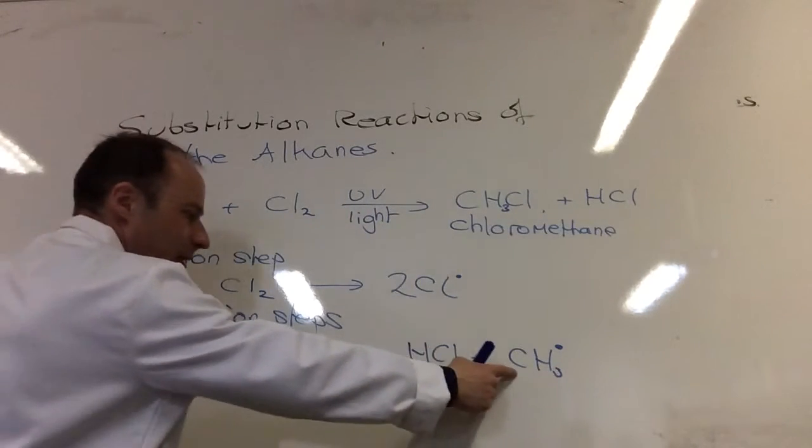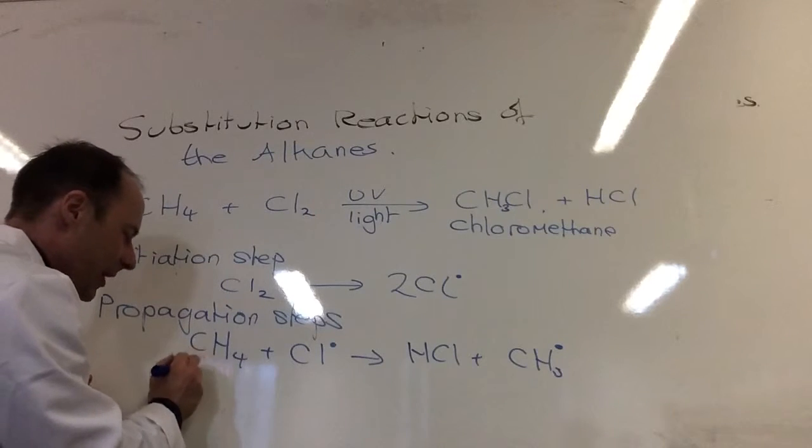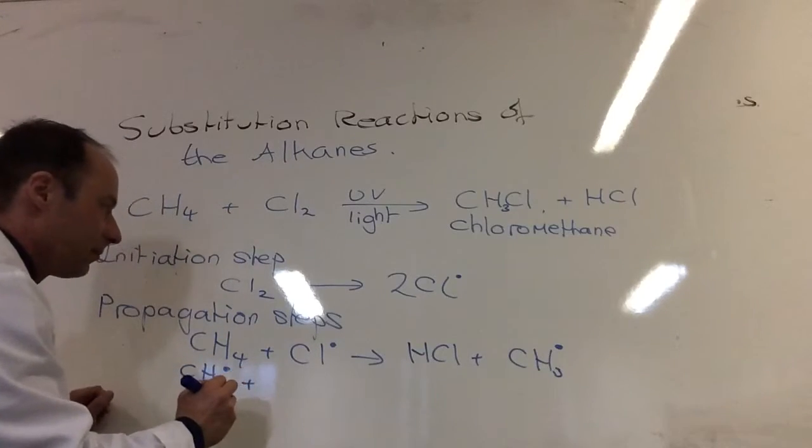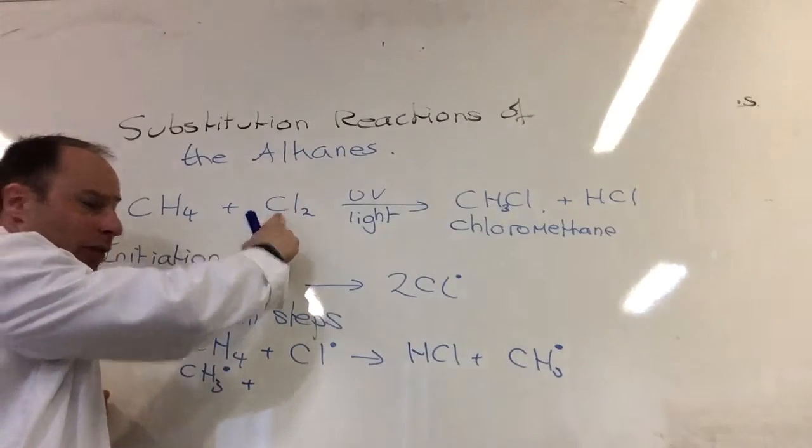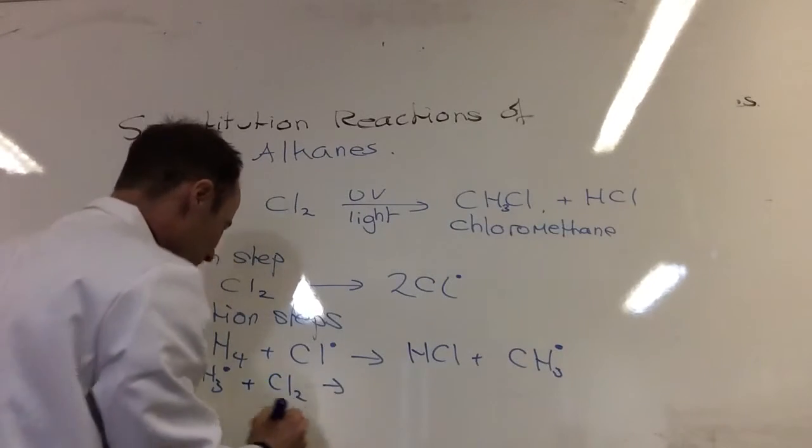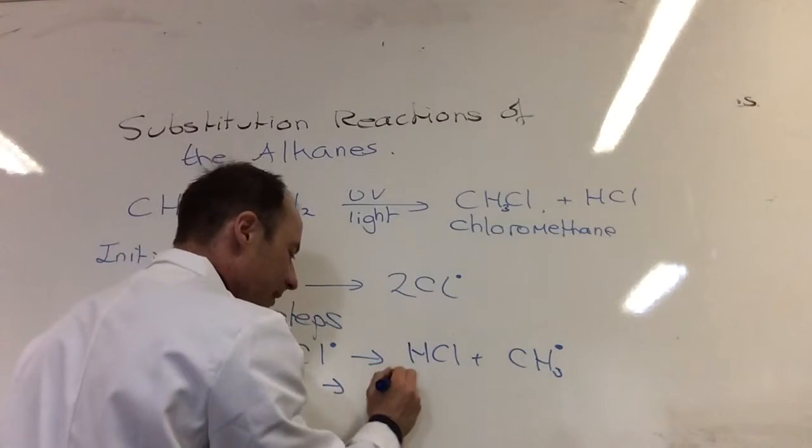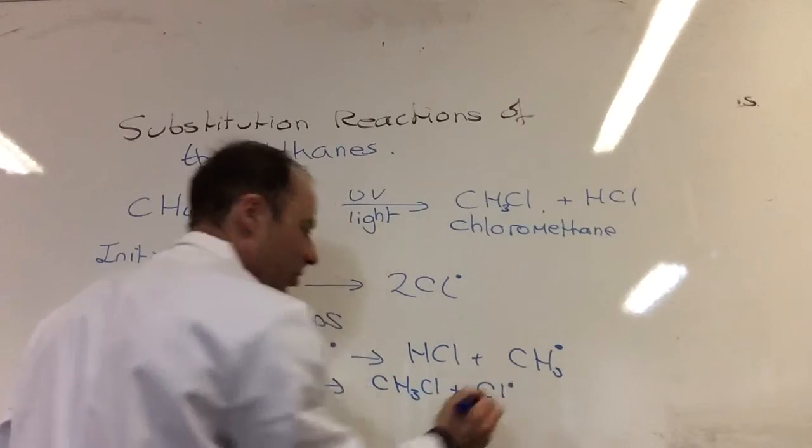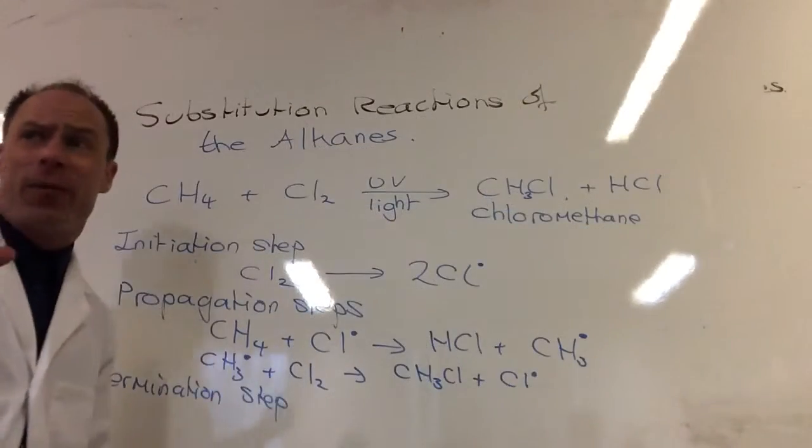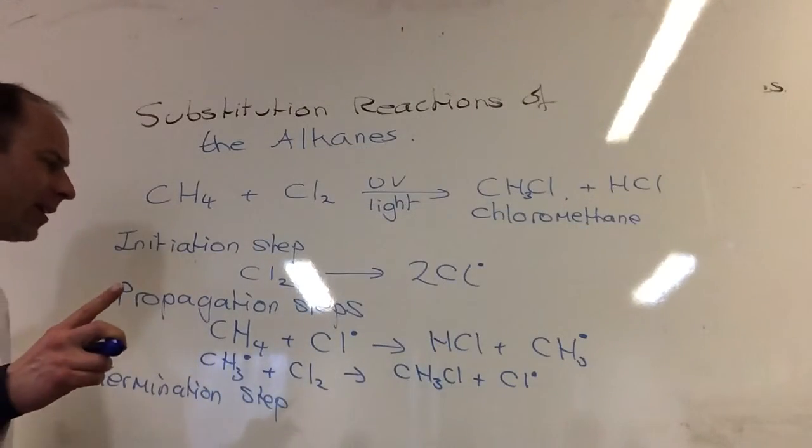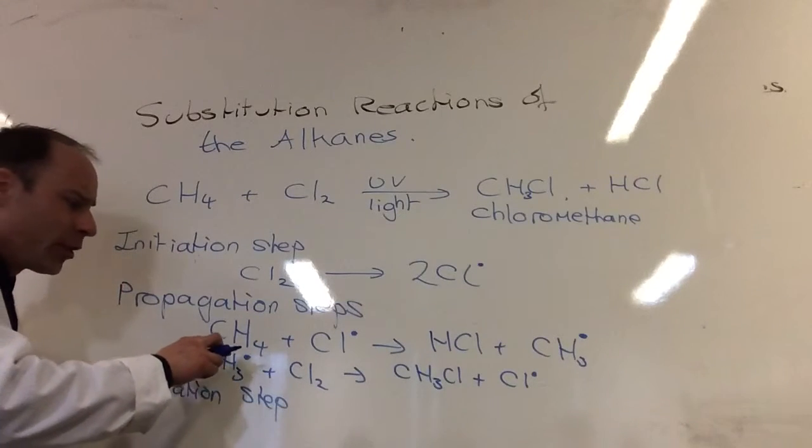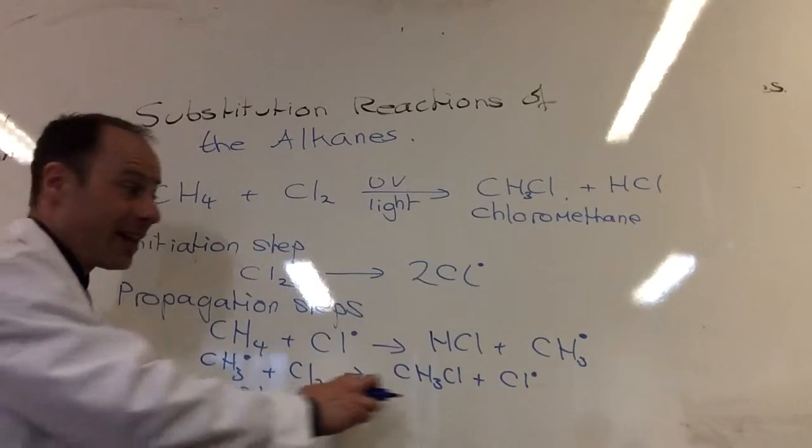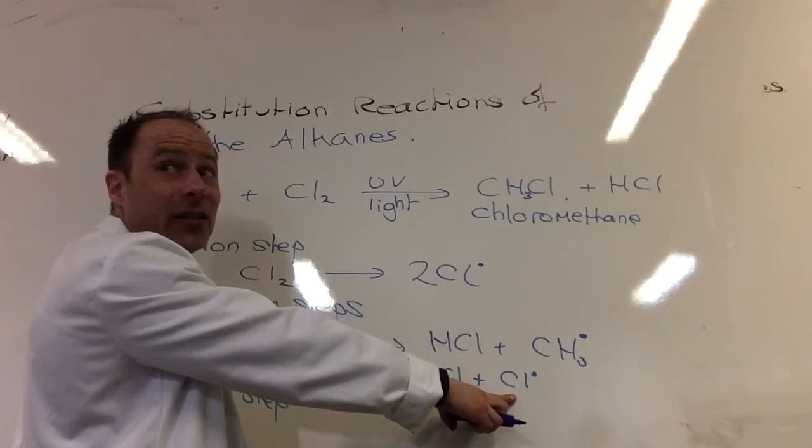The next step, it's still a propagation step, is that CH3 free radical meets a chlorine, another chlorine molecule that's knocking around Cl2, to give me CH3Cl plus Cl dot. So these propagation steps are really important. So I've got two propagations. The first one is I use up a chlorine free radical, but in the next step, look what I've done - I've generated it again.